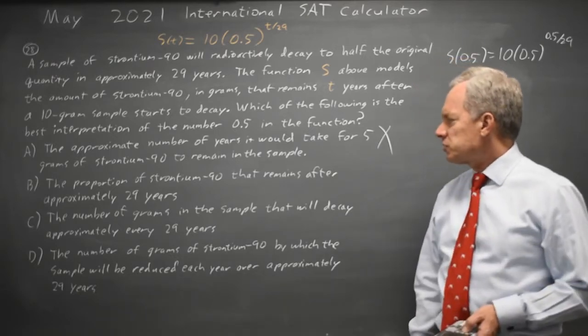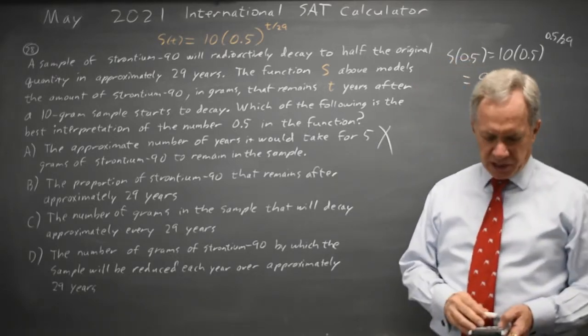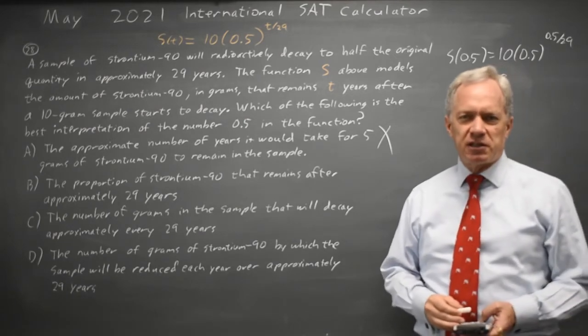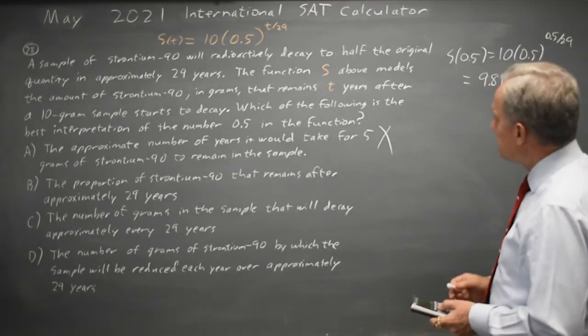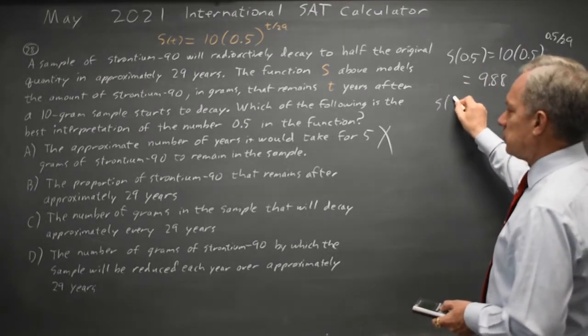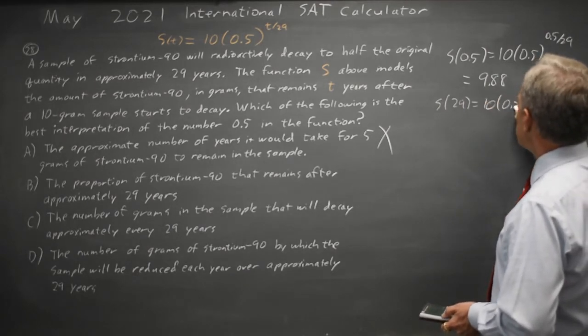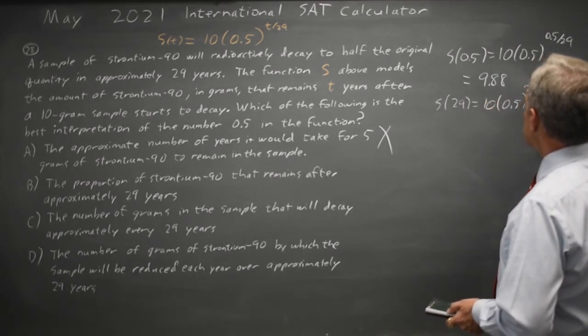Choice B: the proportion that remains after approximately 29 years. If I put in t equals 29 on a graphing or scientific calculator, I get s(29) equals 10 times 0.5 to the 29 over 29.